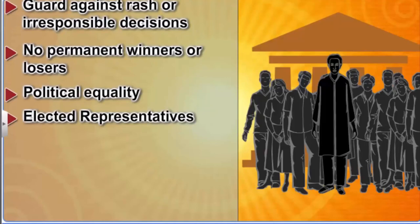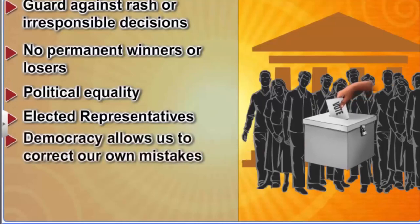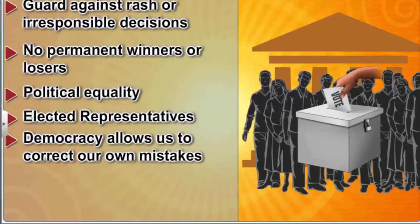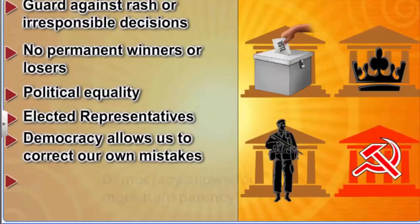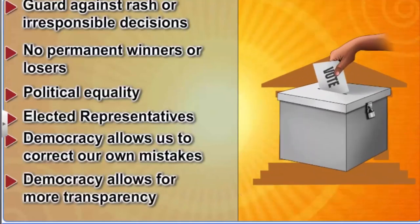When they make mistakes, they assume responsibility for their own mistakes as well. Thus, democracy is better than other forms of government because it allows us to correct our own mistakes. Democracy, as a form of government, allows for relatively more transparency, public discussion, and correction of mistakes.